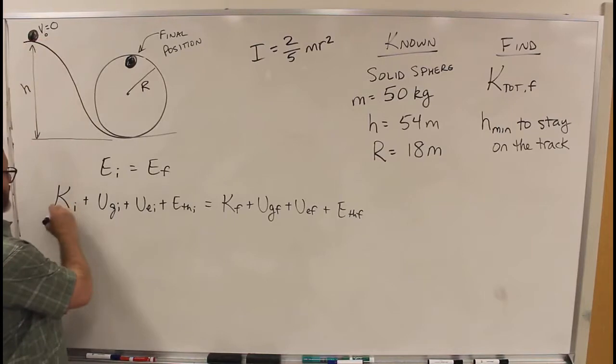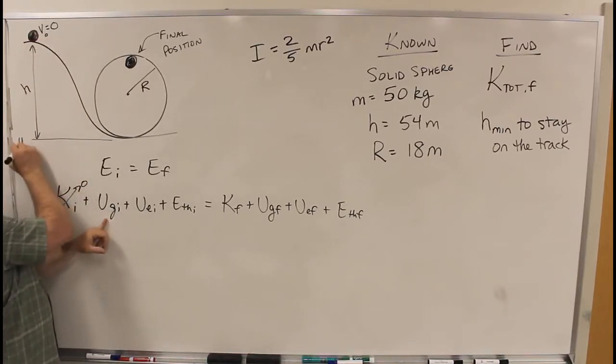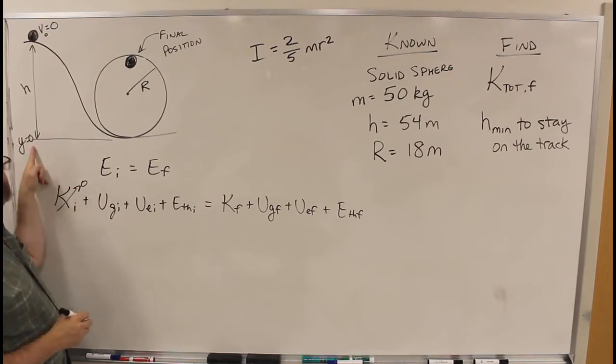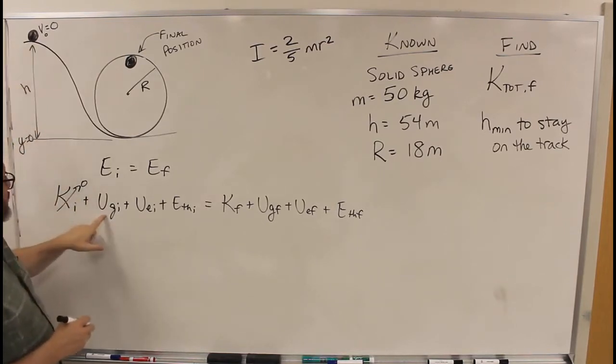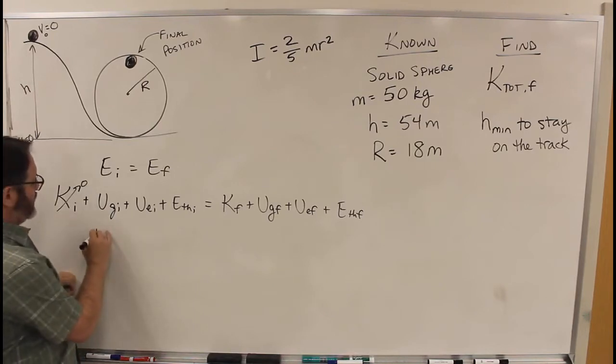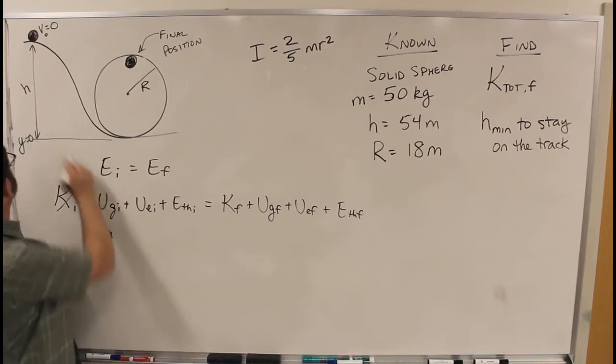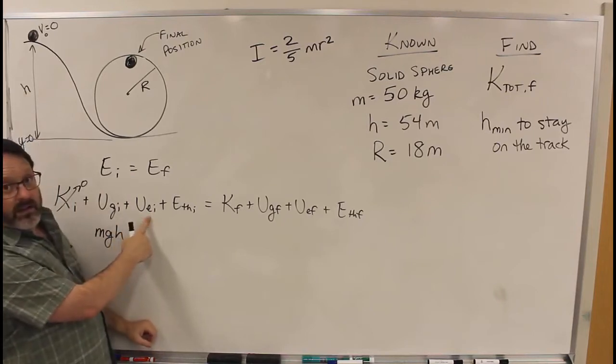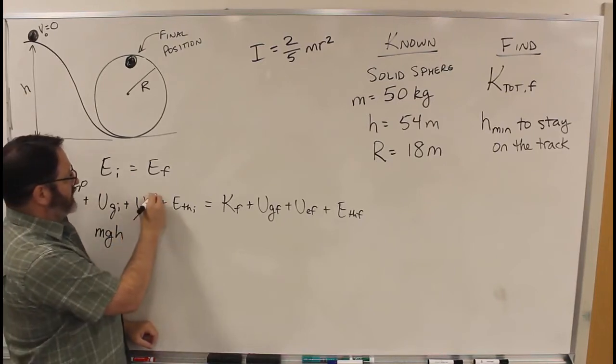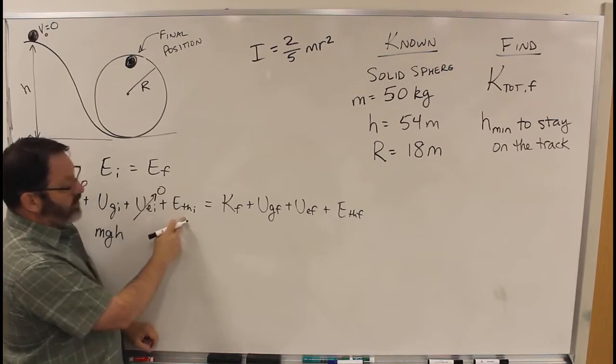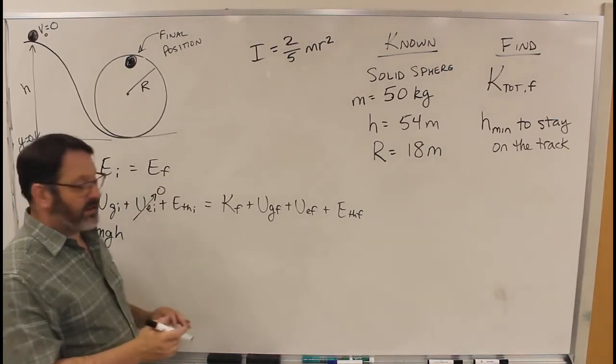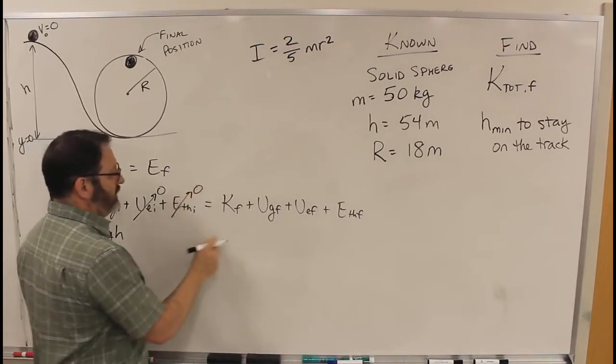So K initial, it's not moving, zero. Gravitational initial, we'll set down here, Y equals zero. So if Y equals zero there, then yes, it does have initial gravitational, that is MGH. Spring, no springs, so that's gone. Thermal, we have nothing, no friction, air resistance, nothing like that, so thermal is gone.